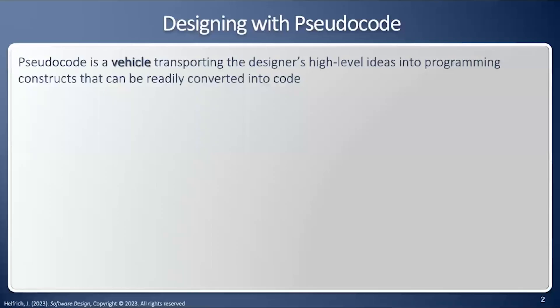This video will demonstrate that process. The first thing we have to note is that pseudocode is a vehicle. It is not actually a programming language, and it transports our high-level design ideas into the programming constructs that the computer needs. We start with an English or natural language description, and we've got to turn it into machine language, because a CPU can only understand the ones and zeros of machine language.